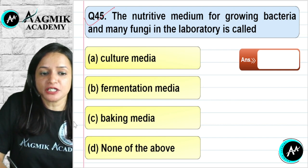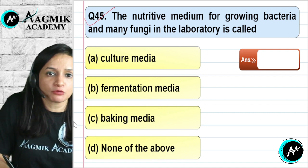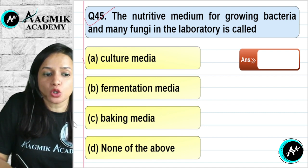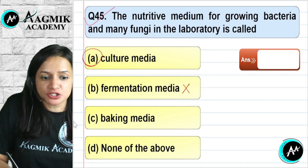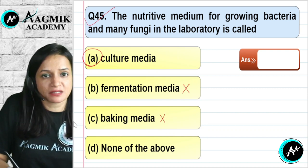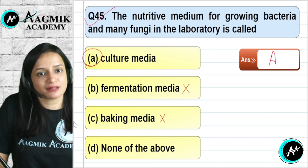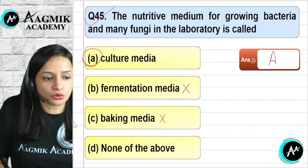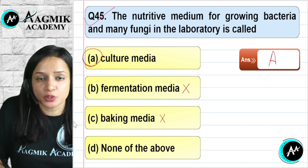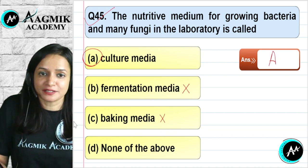Question number 45: The nutritive medium for growing bacteria and fungi in the laboratory is called culture media. It is not called fermentation media or baking media. Bacteria and fungi proliferate and divide in culture media to form colonies. The correct option is A — culture media. That's all for this lecture covering previous year and practice questions on microbes in human welfare.